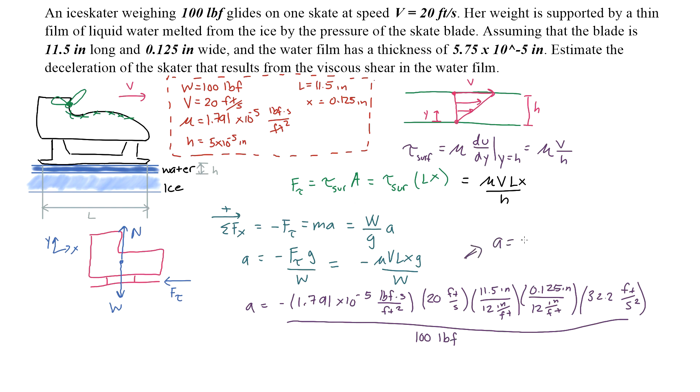When you plug in all these numbers into your calculator, what you get is 0.240 feet per second squared. That is the deceleration of the skater, and that is your final answer.